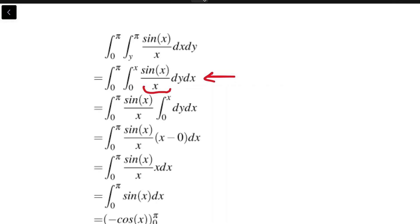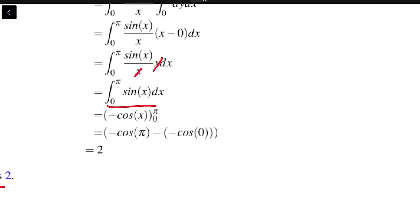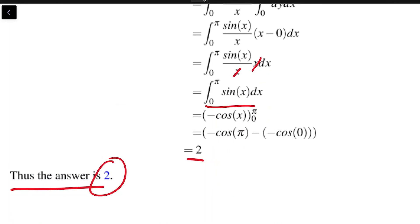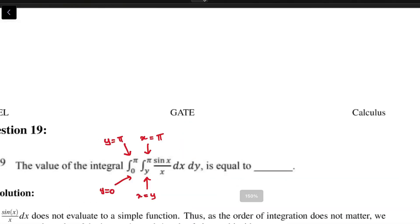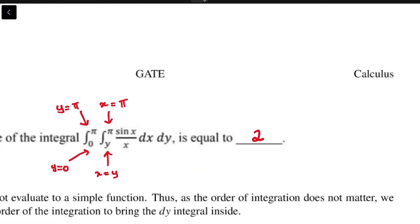Then we can bring the sin(x)/x out because it is not a function of the variable of integral y. And 0 to x dy will be x minus 0, so as x and x cancel, we will be integrating sin(x) from 0 to π, which evaluates to 2. That is the answer to this question.